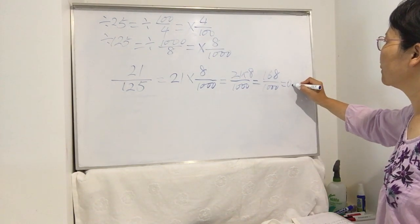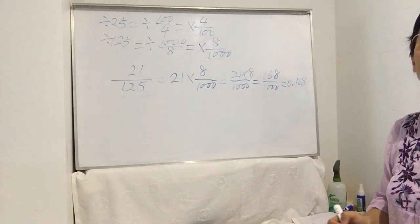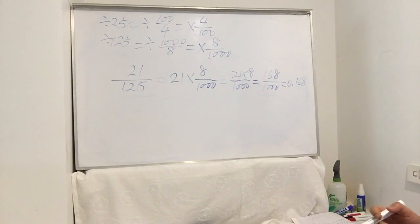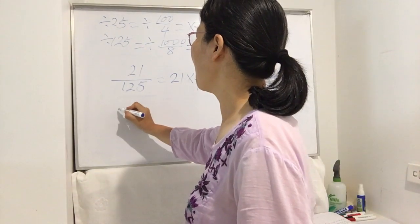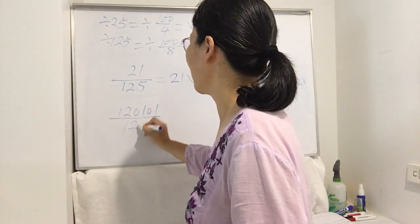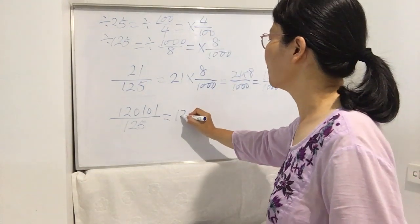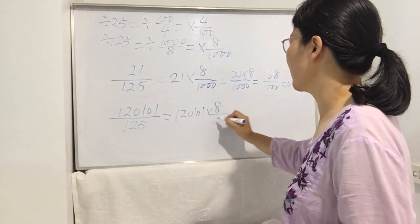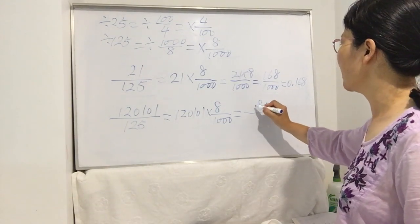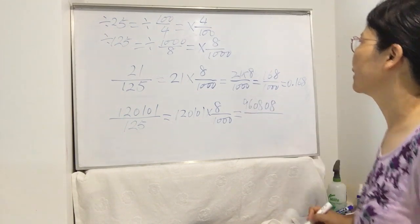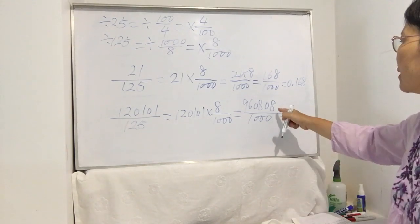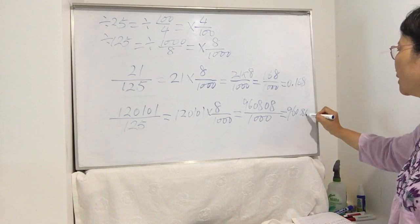21 times 8 equals 168, divided by 1000, so the answer is 0.168. Let's try one more example with a bigger number: 120101 divided by 125. Using the same technique: 120101 times 8 divided by 1000. 120101 times 8 equals 960808, divided by 1000, so the answer is 960.808.